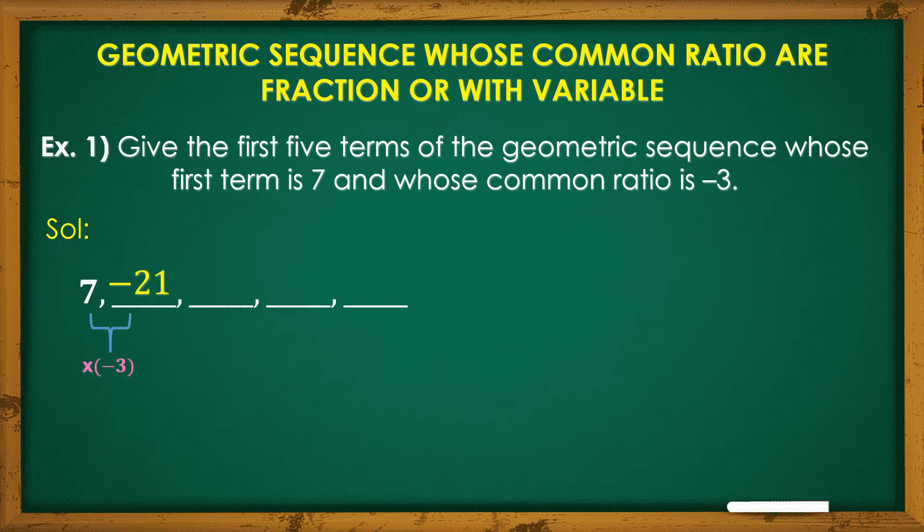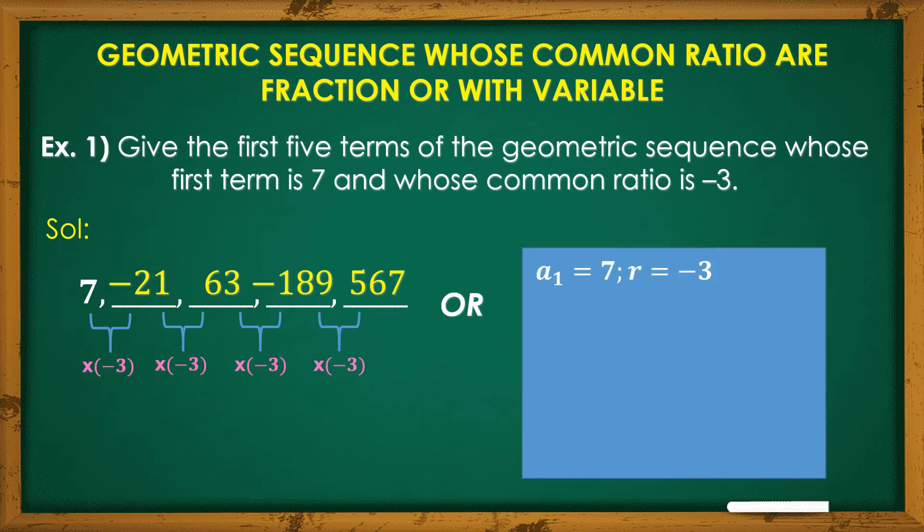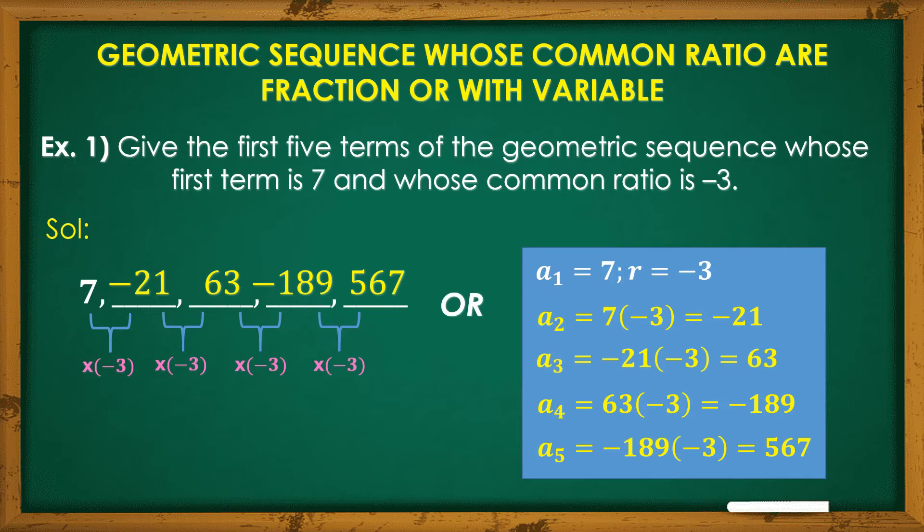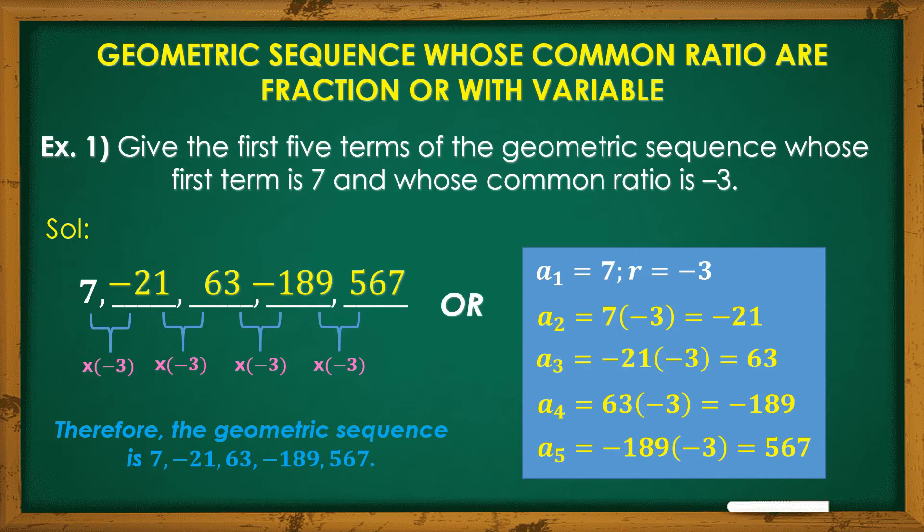7 times negative 3 is negative 21. Negative 21 times negative 3 is positive 63. 63 times negative 3 is negative 189. Times negative 3, we get 567. Or, given a sub 1, which is our first term, 7, and our common ratio, which is negative 3, pwede natin silang isolve by equations. A sub 2 equals 7 times negative 3 equals negative 21. A sub 3 equals negative 21 times negative 3 equals 63. A sub 4 equals 63 times negative 3 equals negative 189. And yung a sub 5 is equal to negative 189 times negative 3, we get 567. That completes our geometric sequence whose first term is 7 and whose common ratio is negative 3.